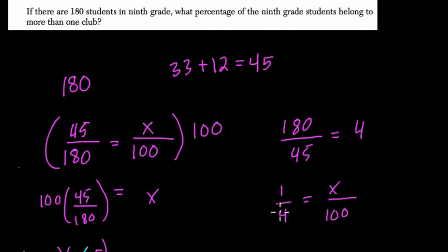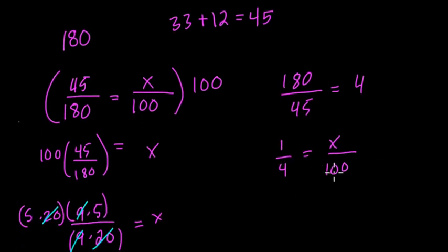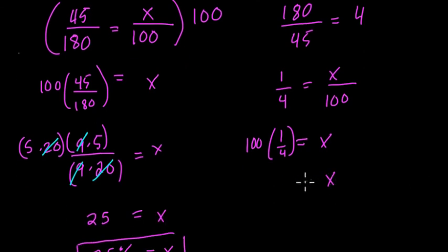Basically, 1 fourth, we have 4 equal pieces here. It fits into 4 times. So what does that add to percent? Well, if we solve here, multiply both sides by 100, and you would get X equals 100 times a fourth, which again is 25. Still, we get 25%.